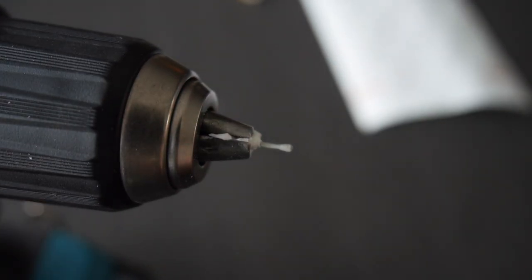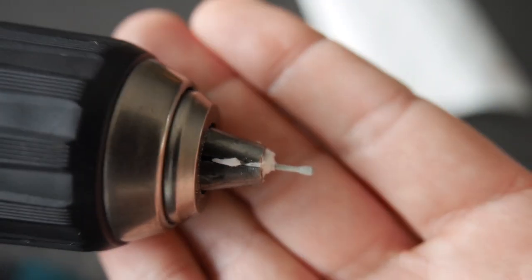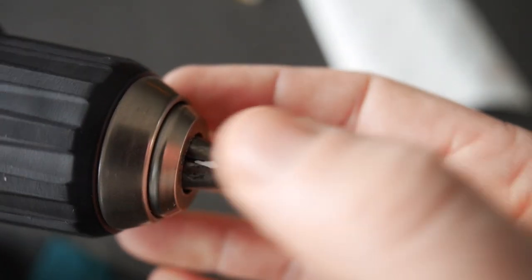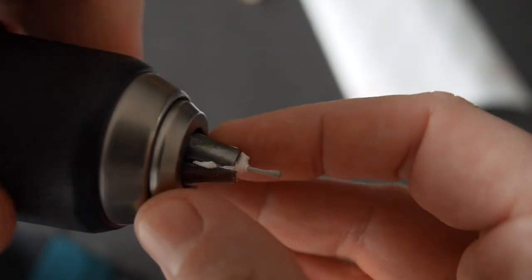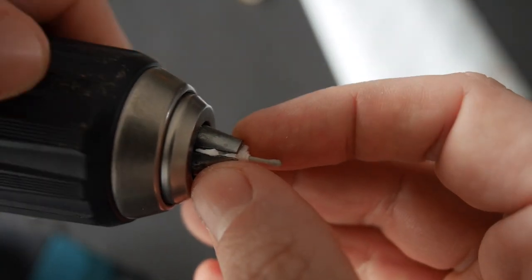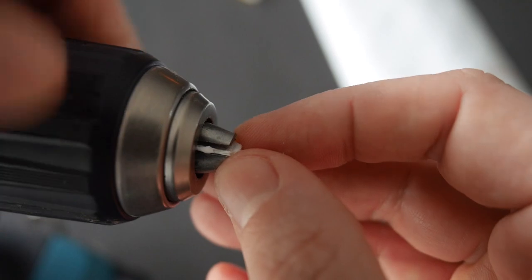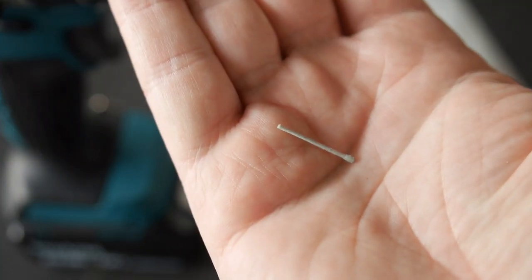It only takes a few seconds. The aim is to file the base of the nib to make the same diameter as the nib shank. The result can be seen here.